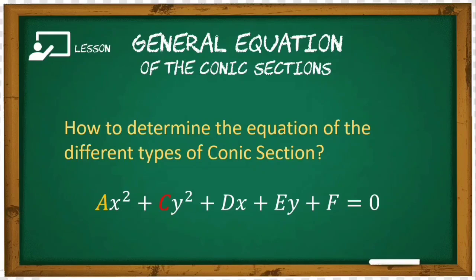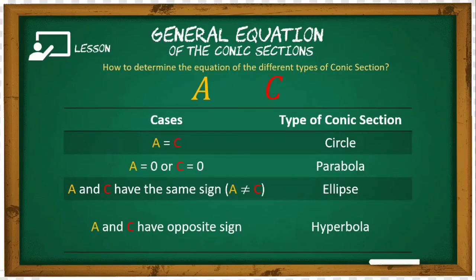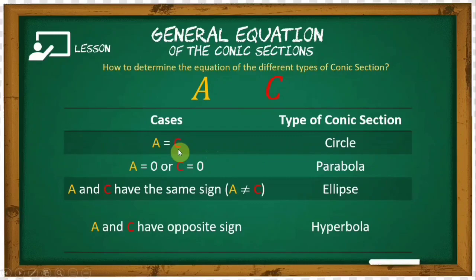Since we have four different types of conic sections, we have four cases. For the first case: if a is equal to c — meaning they have the same value — for example, if a is 1, then c must also be 1; if a is negative 2, then c must also be negative 2 — then the equation represents a circle.